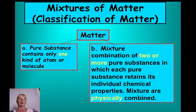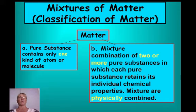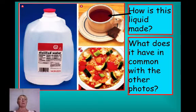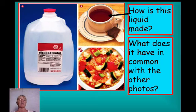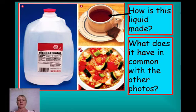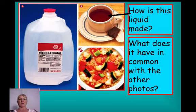Mixtures are just physically combined. If Superman could look at a pure substance with superhuman vision, he would see only one kind of atom or one kind of molecule — for example, the compound water, where all you'd see are H₂O molecules. The soup in the picture is definitely a mixture as well, since it can have varying amounts of different vegetables, giving it a varying composition.